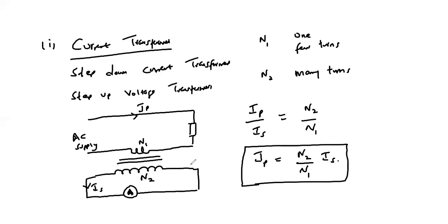It is important to notice that the secondary winding of the current transformer must never be left open. If left open, the current in the secondary becomes zero, and since this current normally opposes the primary ampere-turns, there is no counter magnetomotive force. The unopposed primary magnetomotive force produces high flux in the core, resulting in excessive core losses and overheating of the core beyond safe limits.